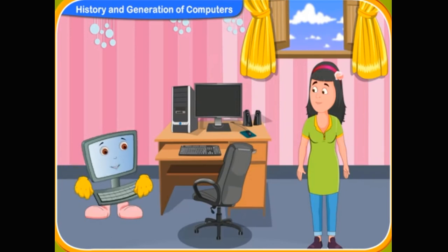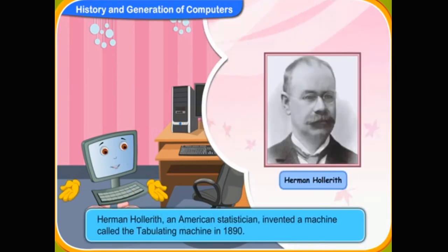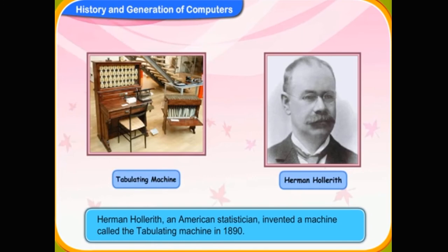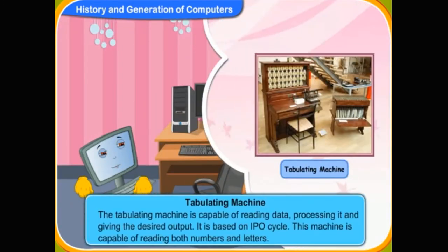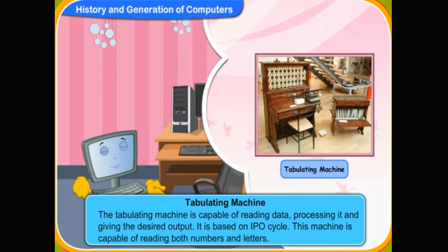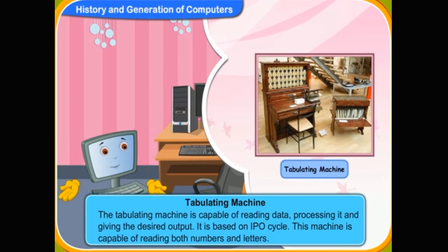In 1890, Herman Hollerith, an American statistician, invented a machine called the Tabulating Machine. The tabulating machine is capable of reading data, processing it, and giving the desired output. It is based on the IPO — Input, Processing, and Output cycle. This machine is capable of reading both numbers and letters.